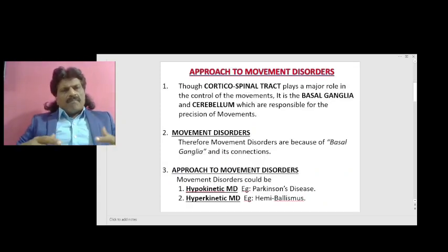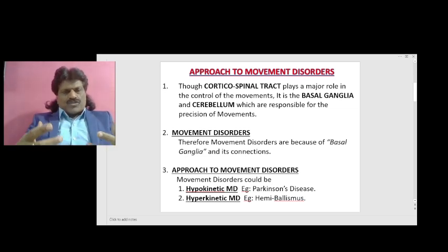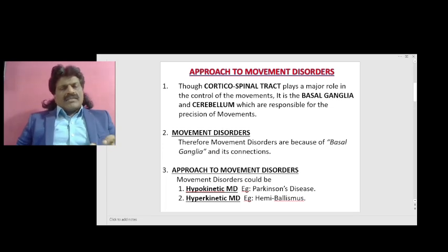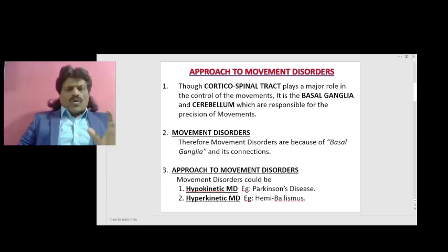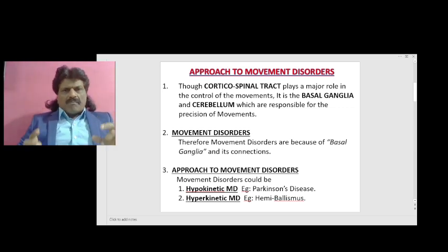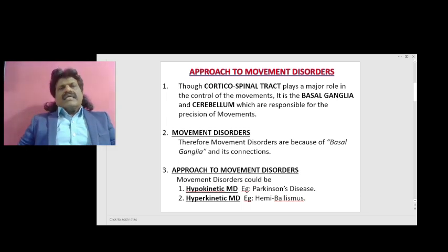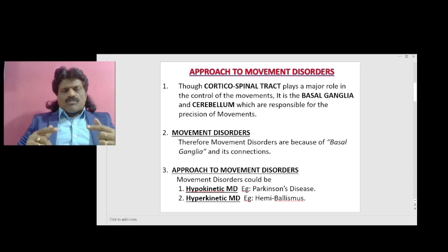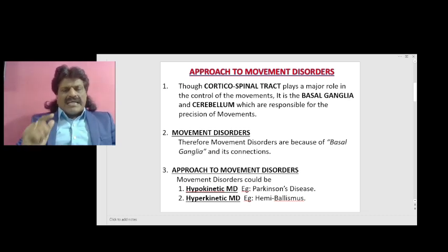When a person presents with a movement disorder, how do we approach? To understand this, we need to understand a basic principle. Though the corticospinal tract plays a major role in the control of movements, it is the basal ganglia and cerebellum which are responsible for the precision of movements. Therefore, movement disorders are because of basal ganglia and its connections.